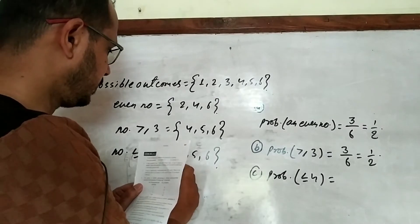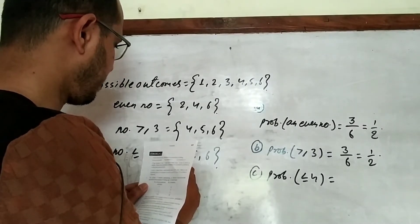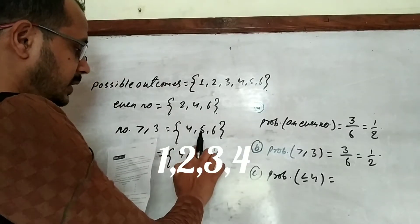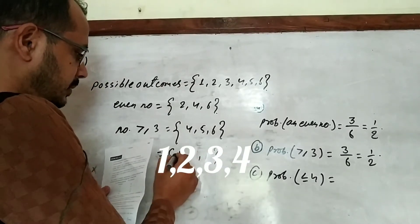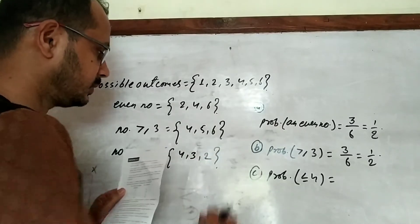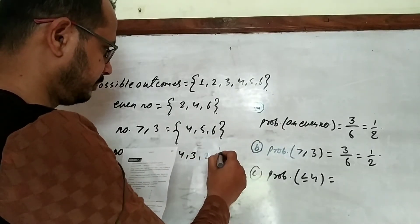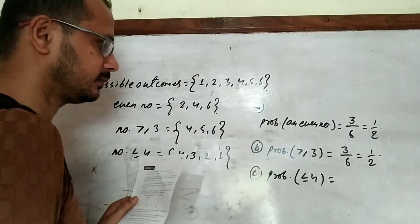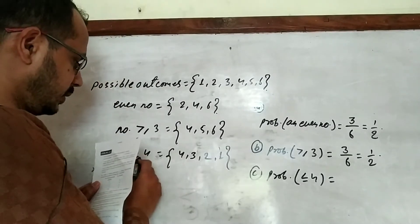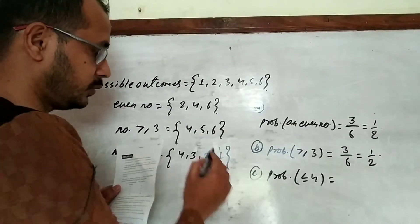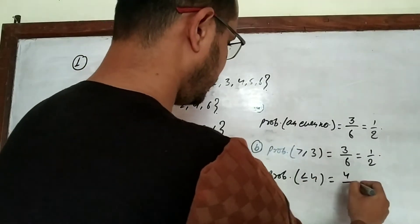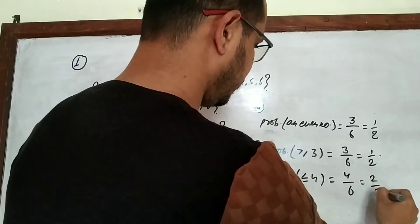For part (c), a number less than or equal to four means the numbers 1, 2, 3, and 4 — that is 4 favorable outcomes. So the probability is 4/6 = 2/3.